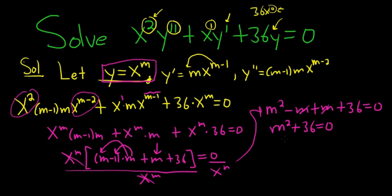To solve this for m, we can subtract 36, so we have m squared equals negative 36. And when you take the square root here, you will get a plus or minus. So taking the square root, we get m equals plus or minus 6i.